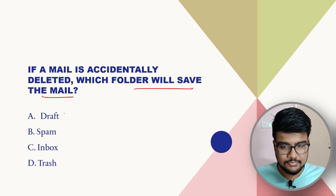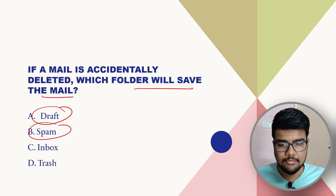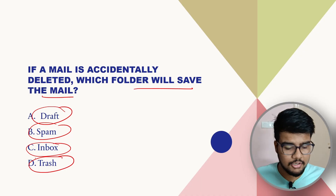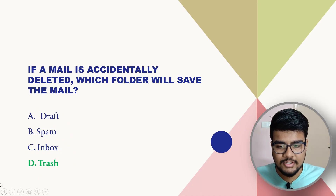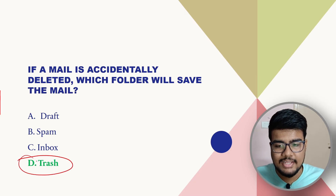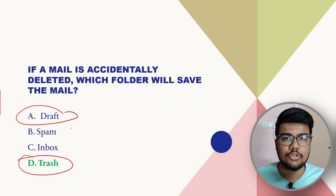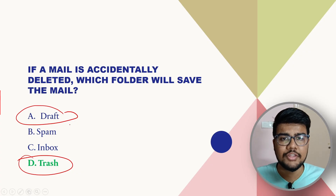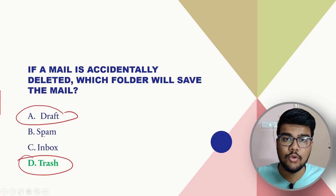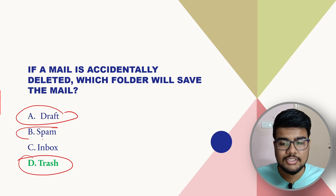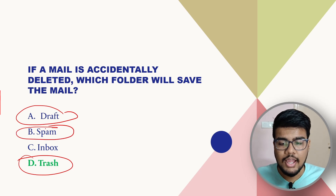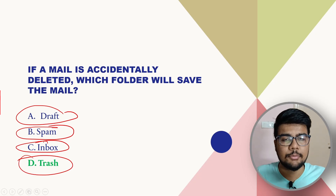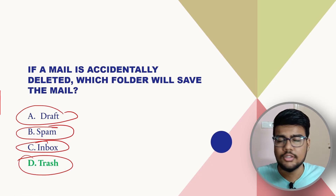If a main email is accidentally deleted, which folder saves this mail — Draft, Spam, Inbox, or Trash? The answer is Trash. You should also know: Draft is where unsaved emails you have not sent are stored; Spam is where spam mails are collected; and Inbox is where genuine received emails appear.